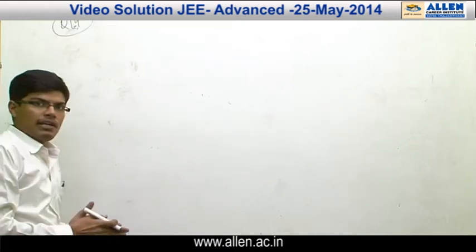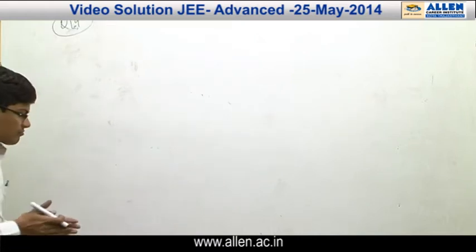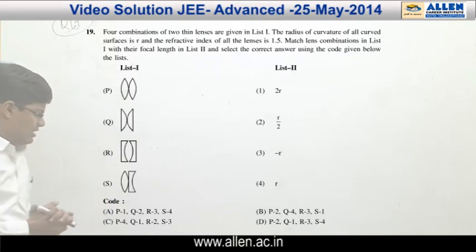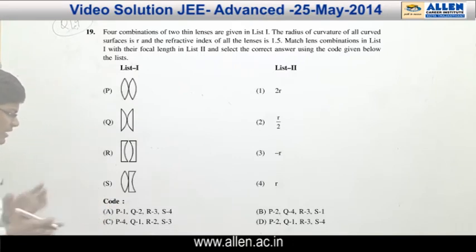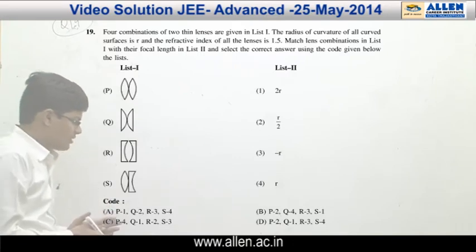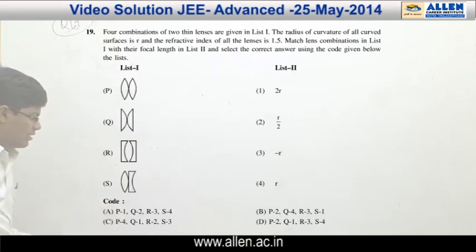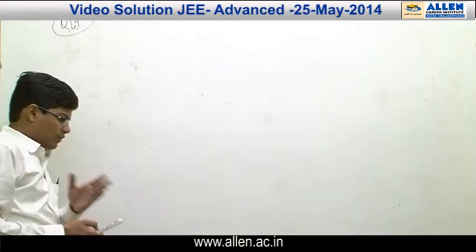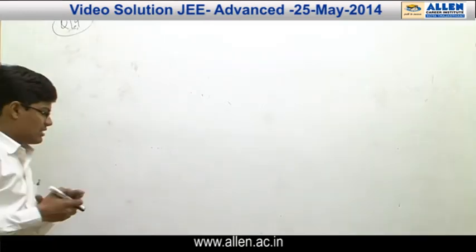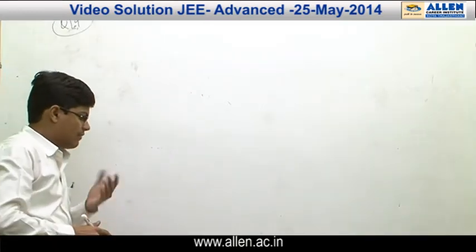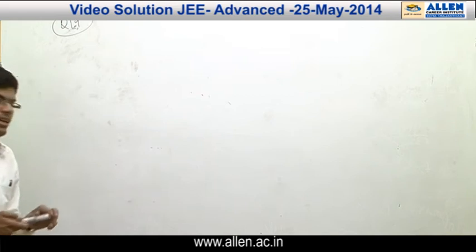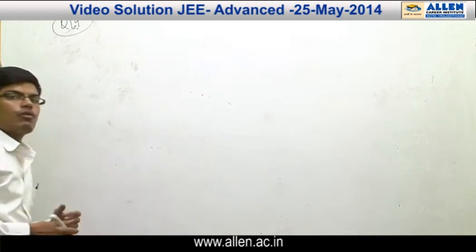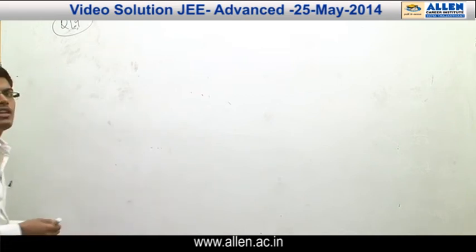Now we will be discussing question number 19. It is given that there are two thin lenses and their various combinations are given in P, Q, R and S. The radius of curvature of all the curved surfaces is R and the refractive index of the material is 1.5. We have to find the focal length for each combination.